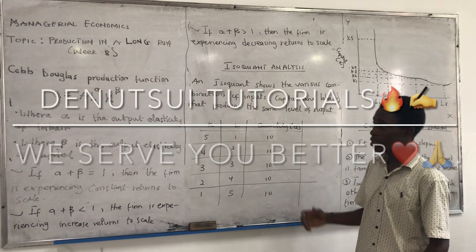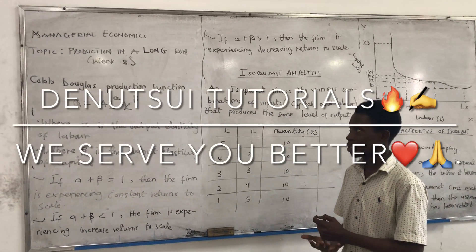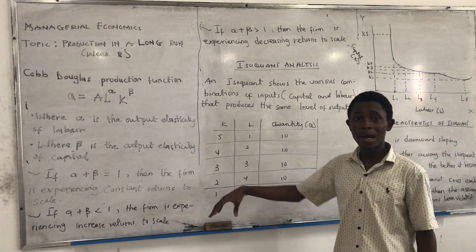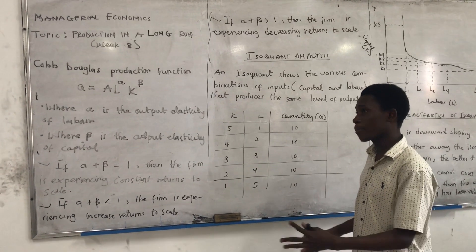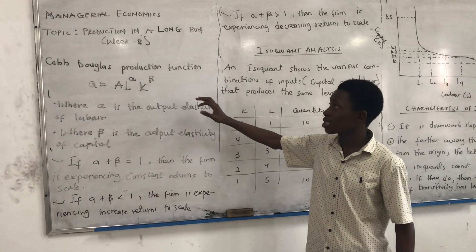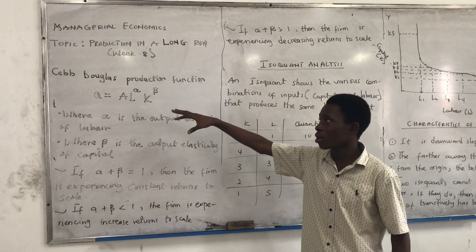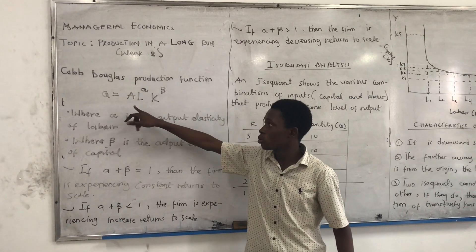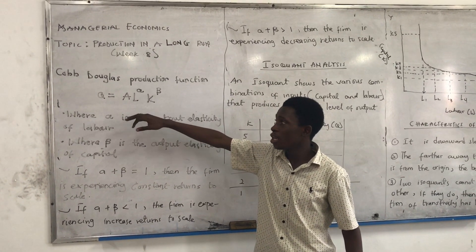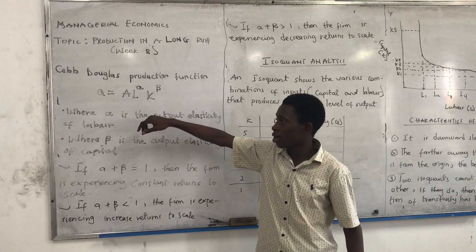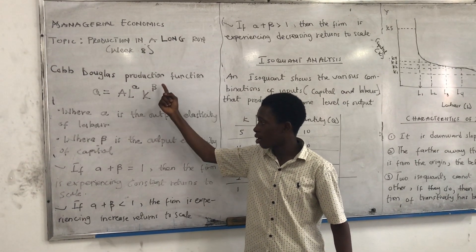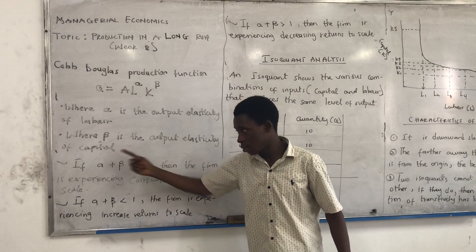We are talking about production — production in the long run and production in the short run. In the short run, labor is fixed. In the long run, both capital and labor vary. Production in the long run is based on the Cobb-Douglas production function: Q = A·L^α·K^β, where L is labor, K is capital, A is a constant, alpha is the output elasticity of labor, and beta is the output elasticity of capital.